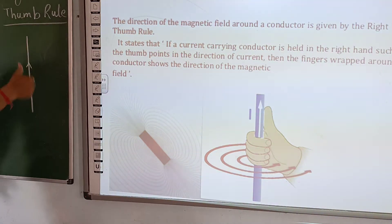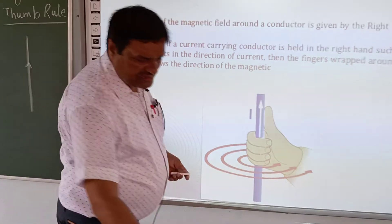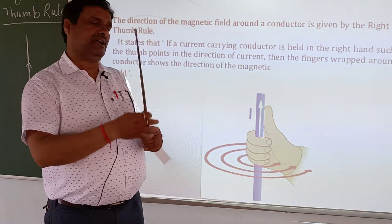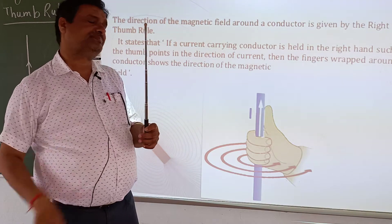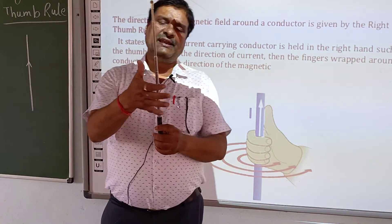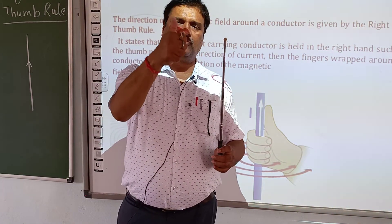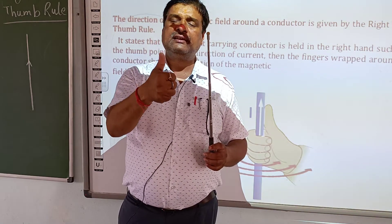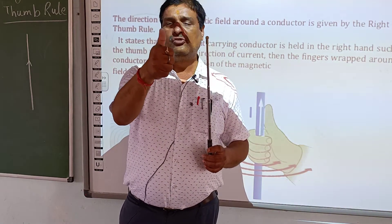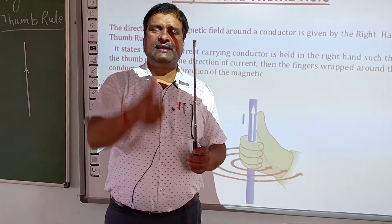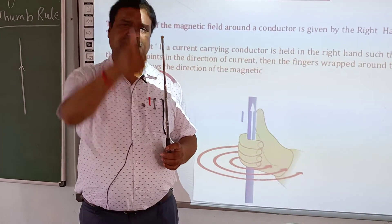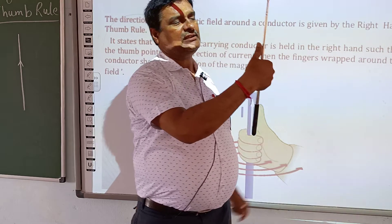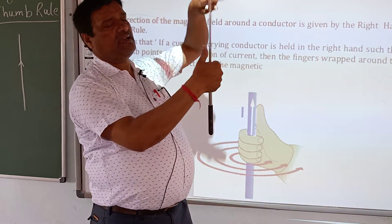Now the thumb is in this direction — the thumb is showing the direction of current. The direction of current is moving in the upward direction, the current is moving in the upward direction. So if we pick it up, the current is moving in the upward direction.